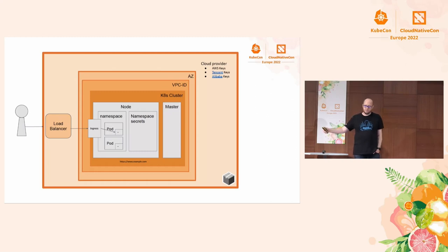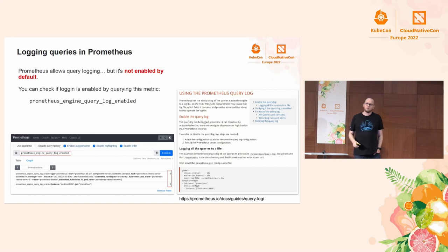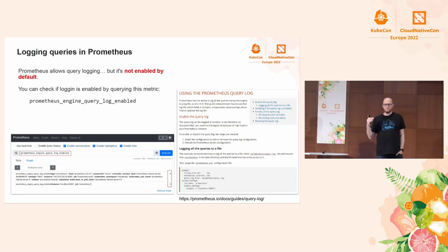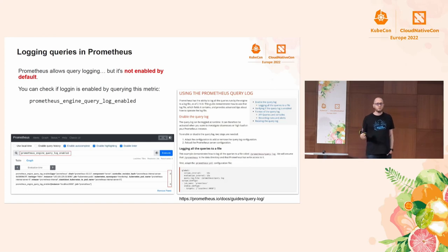We already have a lot of information and a detailed map of the cluster we want to attack. And the interesting part? We gathered all this information most probably without anyone noticing, because Prometheus has the capability of logging all queries made by the API and the frontend. But unfortunately, this is disabled by default. You can even check if it is disabled or enabled with the metric prometheus_engine_query_log_enable. If this is zero, we are in ninja mode and nothing we did was logged.